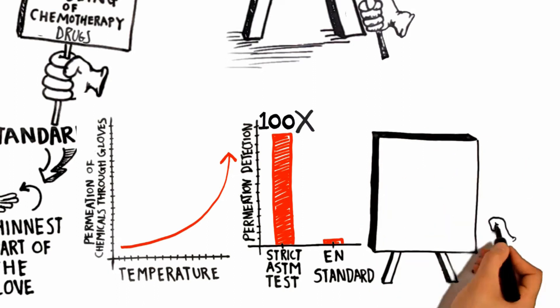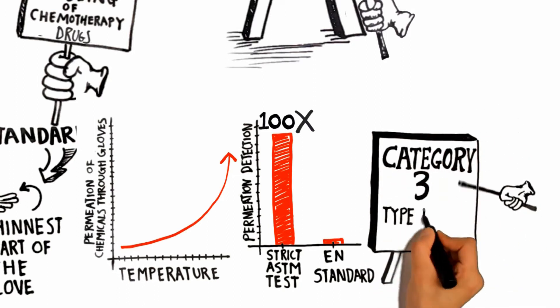The garment range is classified as Category 3, Type 5 and 6.